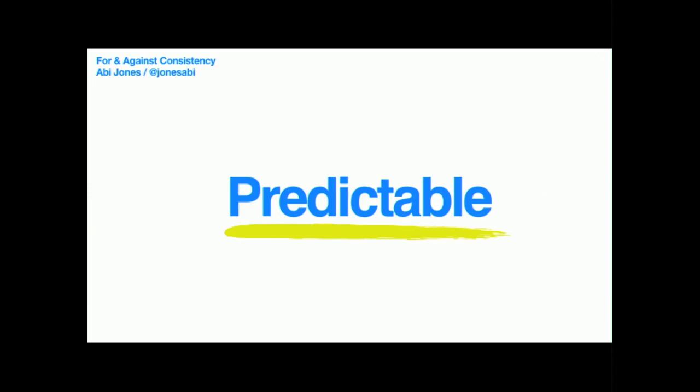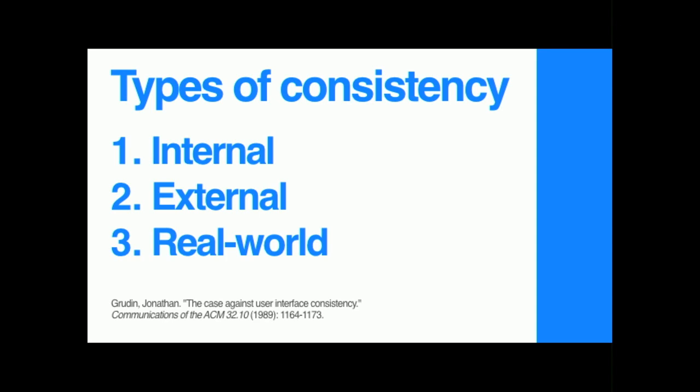Instead, I like to think about making software that's predictable — especially if it's software where somebody is trying to do a job. Today, let's look at a few different types of consistency and think about how predictability can help people.